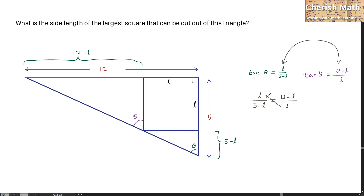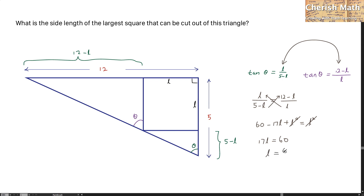Now we cross multiply the equation. This gives L squared, and after simplifying, we get 17L is equal to 60. So the value of L is 60 divided by 17.